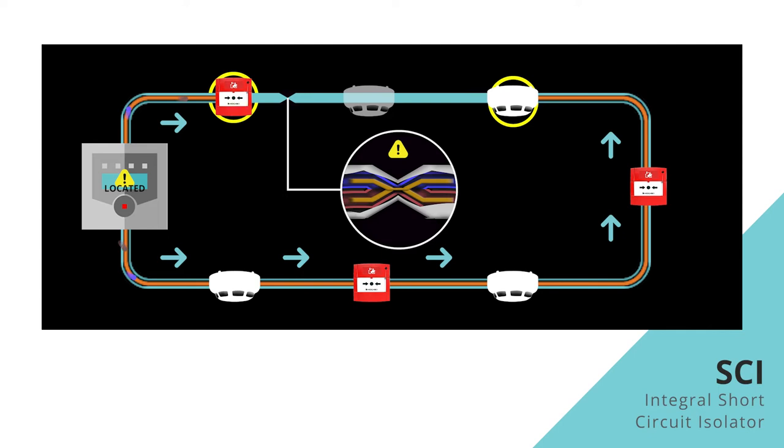This means that on either side of the short circuit the voltage can continue to flow, and the panel can still supply power and receive data from the loop devices. This happens instantaneously, and not only does this maintain the loop's integrity, but the section of loop that's been compromised is isolated, hence the name.